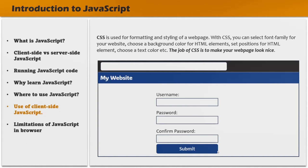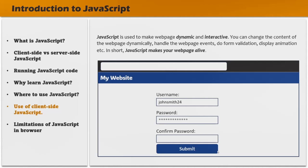CSS is used for formatting and styling of a web page. With CSS, you can select a font family, choose a background color, set the position of HTML elements, choose a text color, etc. Basically, the job of CSS is to make the web page look nice. JavaScript is then used to make web pages dynamic and interactive — you can change content dynamically, handle web page events, do form validation, display animations, and more. In short, JavaScript makes your web pages alive.